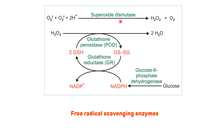The first enzyme is superoxide dismutase, of which there are two types: cytosolic and mitochondrial. Cytosolic superoxide dismutase is copper-zinc dependent, while mitochondrial superoxide dismutase is manganese dependent. Superoxide dismutase converts superoxide anion into hydrogen peroxide and oxygen. Any gene defect in superoxide dismutase leads to amyotrophic lateral sclerosis.